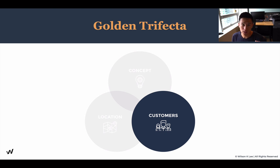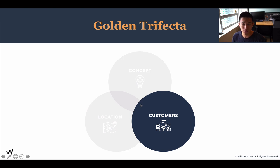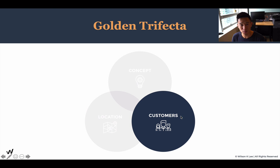In the beginning of our module, we talked about the golden trifecta, which is the middle part right here — the overlaying of the three different components, the elements that we need to consider when opening a thriving, profitable restaurant. We covered the concept, we covered the location, and today we're going to be covering your customers. So make sure you keep watching and take notes.